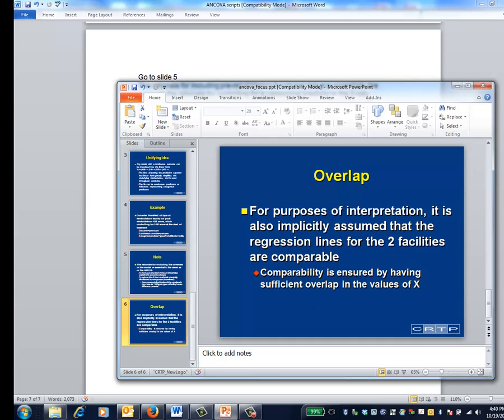The analysis of covariance works best when adjusting for differences in case mix that are small to moderate rather than profound. In practice, this means there is sufficient overlap in the values of pre-rehabilitation functional status among the facilities. We'll follow up on this idea in another module.